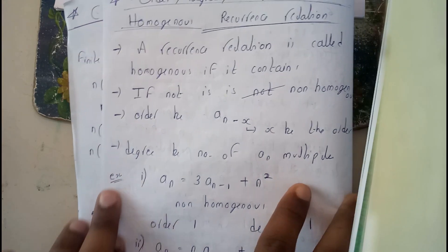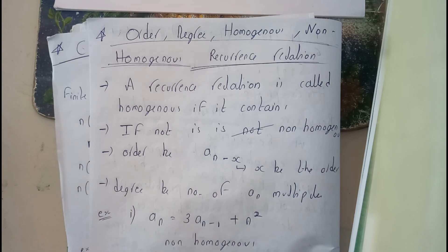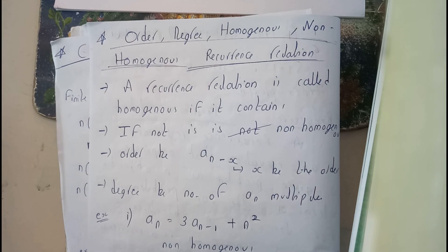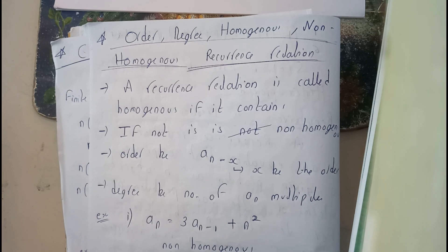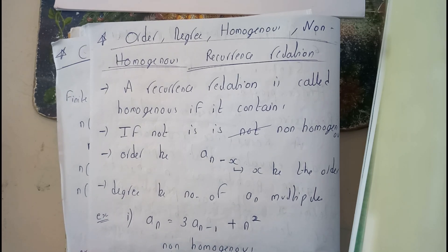Let's find the order and degree of a recurrence relation and determine whether it is homogeneous or non-homogeneous. A recurrence relation is homogeneous if it is expressed in terms of itself only — there should be no other variable. In any other case, it is non-homogeneous. Degree is the power, and order is the base factor — how many times you are decreasing it.